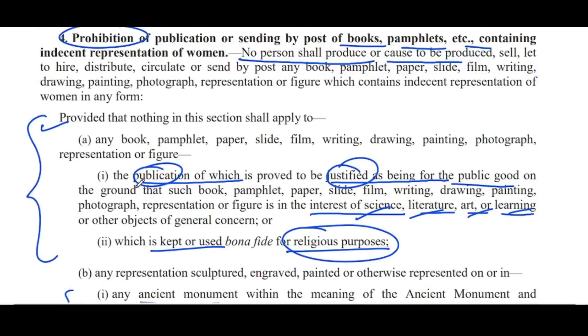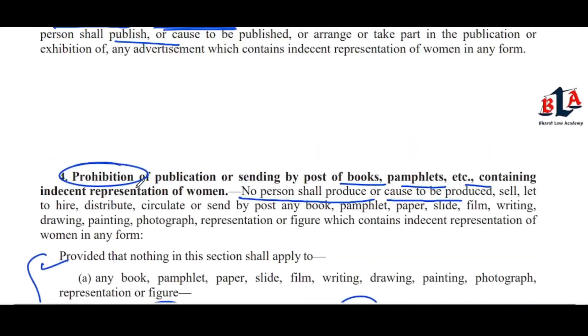Third exception (c): any film in respect of which the provisions of Part Second of the Cinematograph Act 1952 are applicable — prohibition does not apply to those films. So generally, two kinds of offenses are created under Sections 3 and 4.